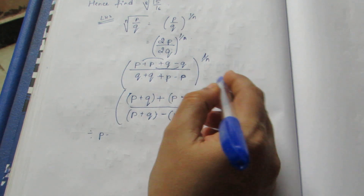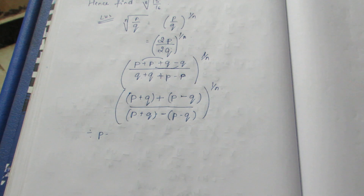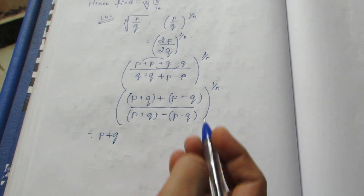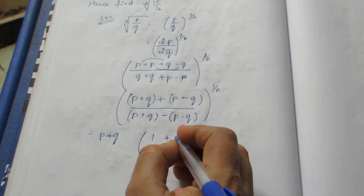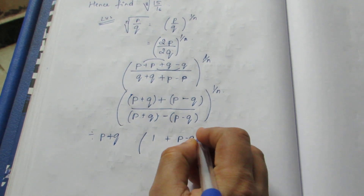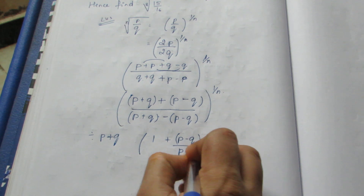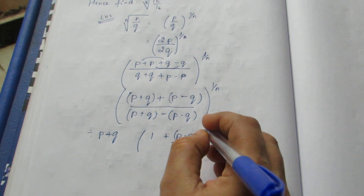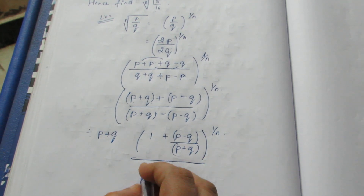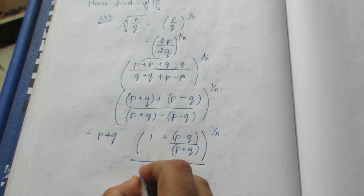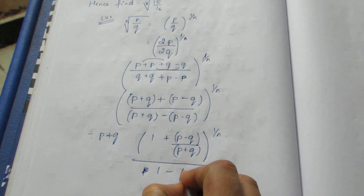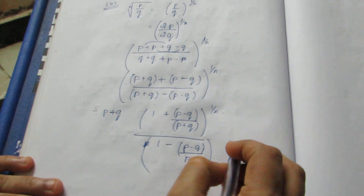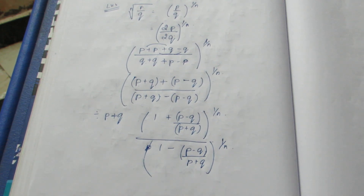We use the binomial expansion for a rational number. The condition is 1 plus x to a rational power. We write the expression as (p plus q) divided by (p plus q), multiplied by 1 minus (p minus q) by (p plus q), all to the power 1 by n. Now we apply the rational binomial expansion.